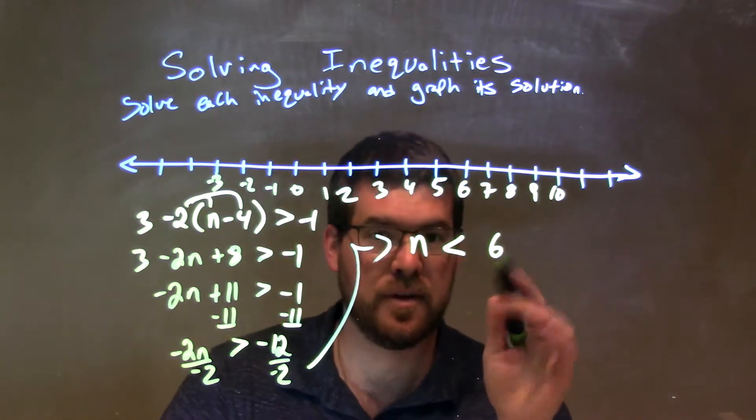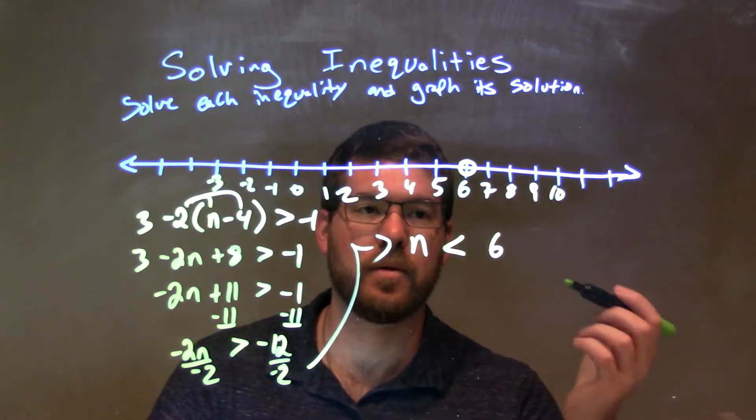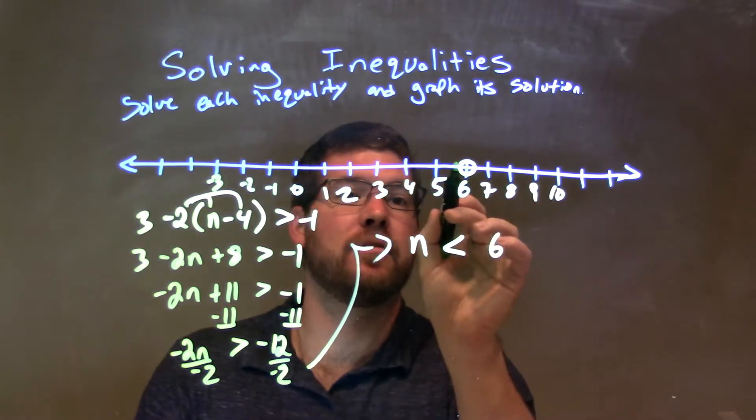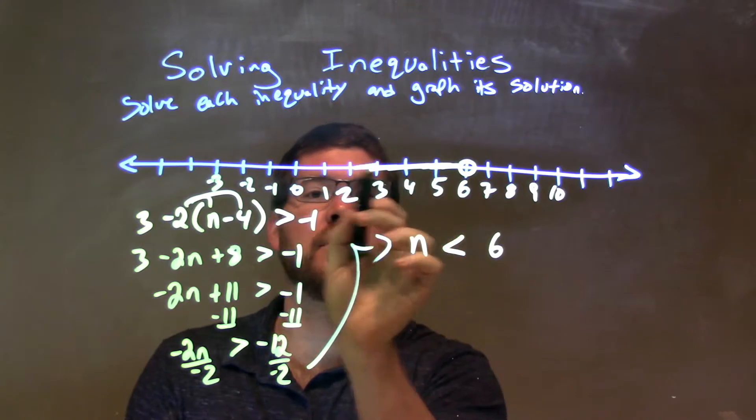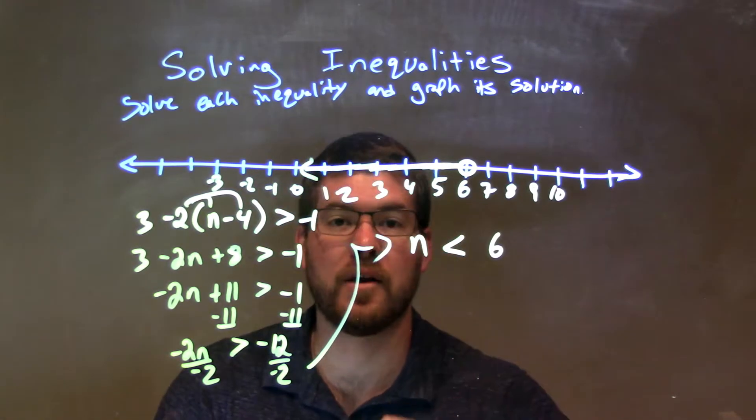Well, since n is less than 6 but not equal to, we have an open circle right there at 6. And then, we need to shade to the left. So, we shade to the left, and there we have our final answer.